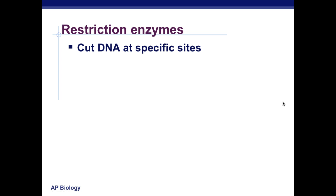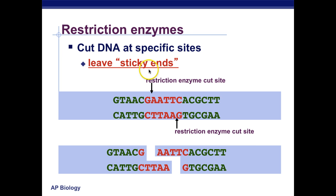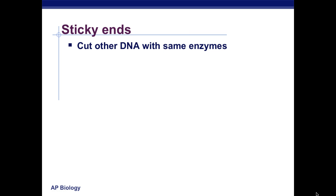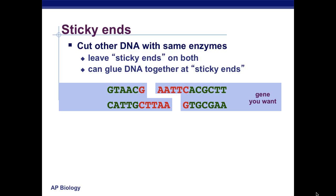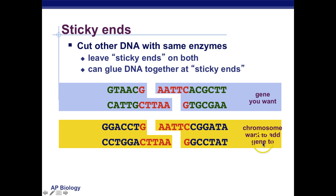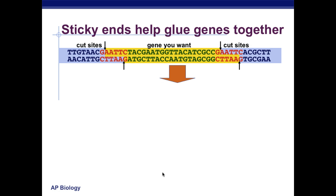Restriction enzymes cut DNA at a specific site and leave sticky ends. Here's the restriction enzyme cutting site and the complementary site — now you have your cut DNA with sticky ends, which are almost like puzzle pieces. When you cut other DNAs with the same enzyme, you're going to leave sticky ends on both, so they're going to fit into each other like puzzle pieces, and you can glue them together at the sticky ends. You get the gene you want, and the chromosome you want to add it to, and then combine the two sticky ends because they'll fit complementary to one another if we use the same restriction enzyme.